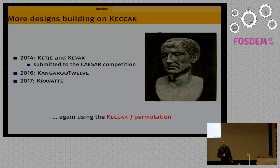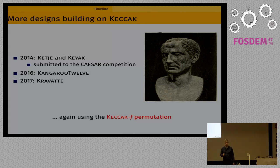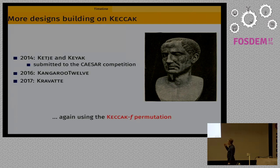Alongside this standardization process, we worked on other variants of Keccak. Keyak and Keccak are authenticated encryption schemes based on Keccak which we submitted to the CAESAR competition — a currently ongoing competition for new authenticated encryption schemes. Last year we proposed a new hash function called Kangaroo12, and more recently we are working on a new set of functions called Kravate. The focus of this presentation is really on these new functions.